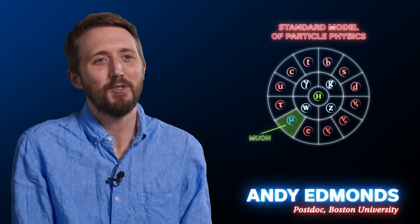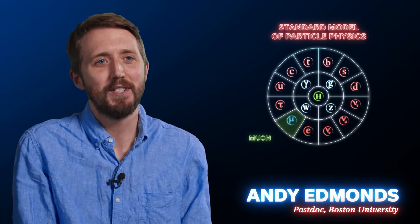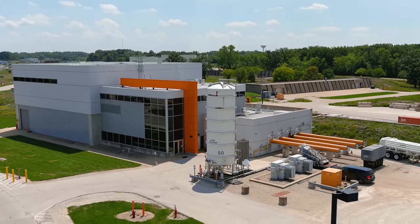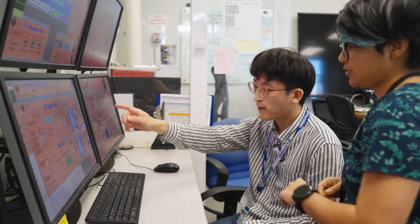So a muon is basically a heavy electron. It's got a mass 200 times higher than the electron's mass. They are unstable, so they live only a short amount of time, like two millionths of a second. They are relatively easy to produce in accelerator laboratories. And also, we can do many tests with them to see if we understand the nature.